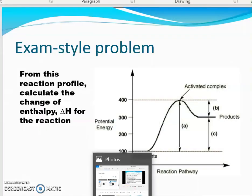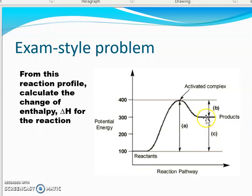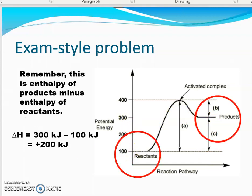We aren't worried about what's going on in between reactants and products — we're just looking at where we start and where we go. The energy difference between reactants and products would be line C. So I do final minus initial: products minus reactants. My products look to be about 300 and my reactants about 100. Final minus initial gives a positive 200 — most likely kilojoules, since joules are the SI unit for energy. So is this reaction endothermic or exothermic?